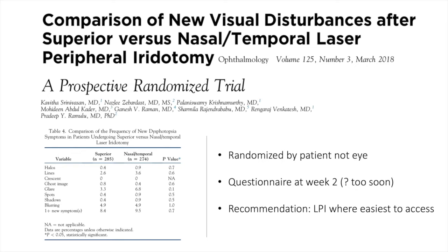Sreenivasan and colleagues also examined this question with a prospective study design, as opposed to Spaeth's retrospective study. The entire study was prospectively randomized by patient and not by eye. Questionnaires were performed at two weeks — which may have been too soon, as symptoms can evolve over weeks. Their conclusion was that LPI placement location didn't matter much for symptoms, and they recommended placing the LPI where it was easiest to access.